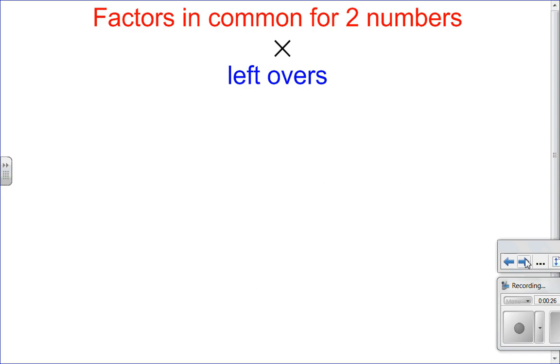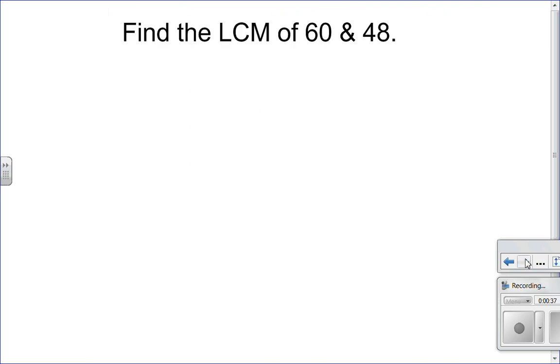So let's start with two numbers. If I want to find the LCM for two numbers, I want to look at, after I've listed out the prime factorization, all the common factors for the two numbers, and then multiply by the leftovers. So let's try an example.